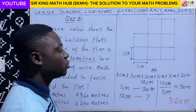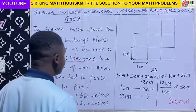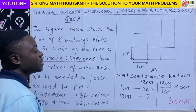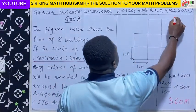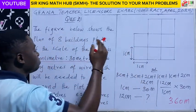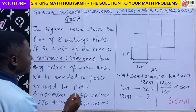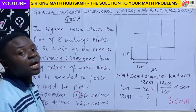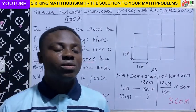So in conclusion, on the ground we will need 360 meters of wire mesh in order to fence around these 8 building plots. Looking at the alternatives, the right answer is option B. I hope you enjoyed this episode. Thanks for watching.